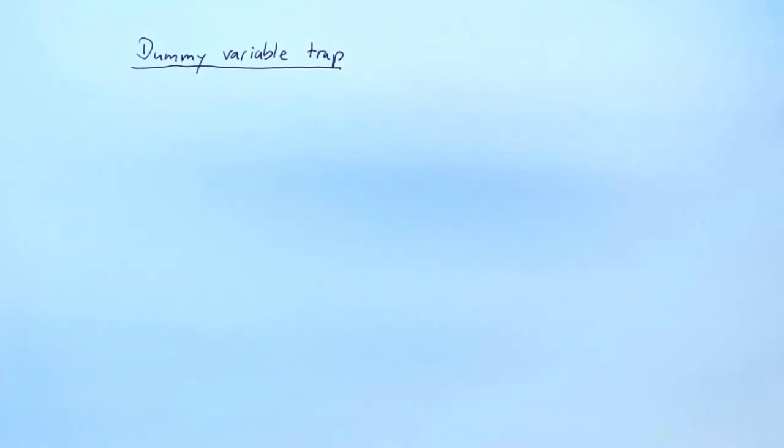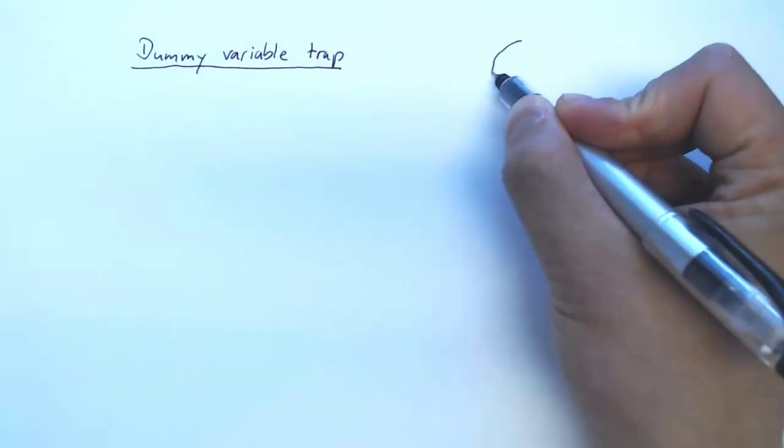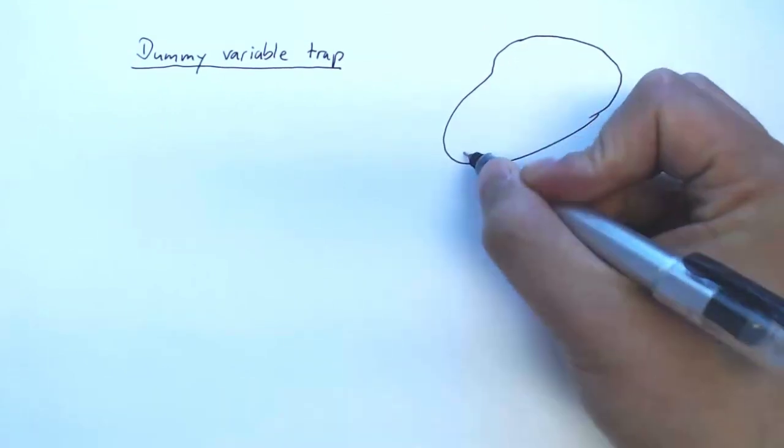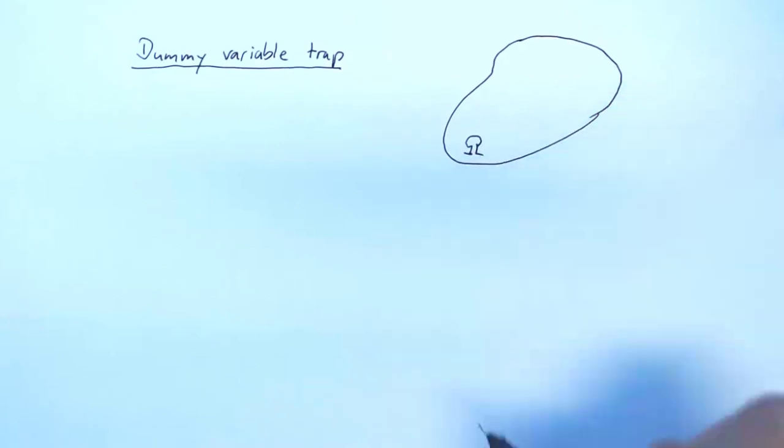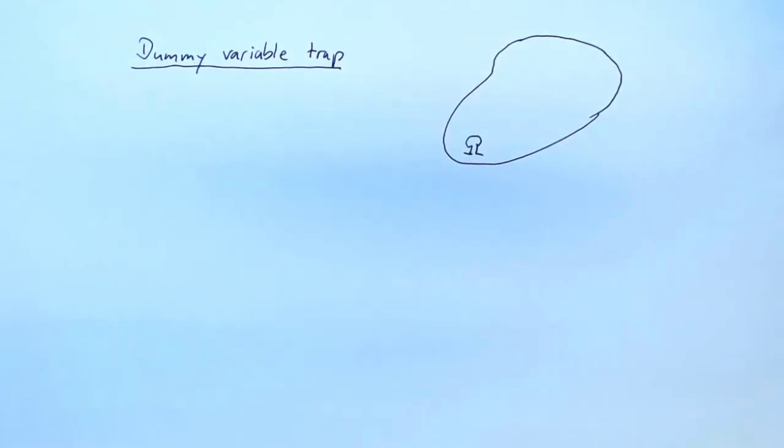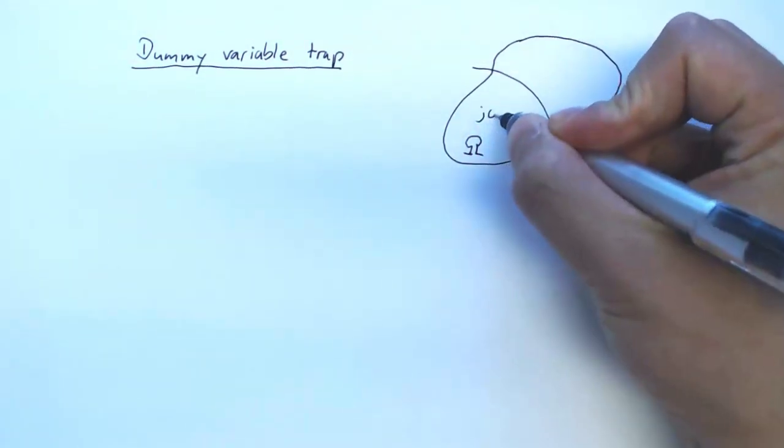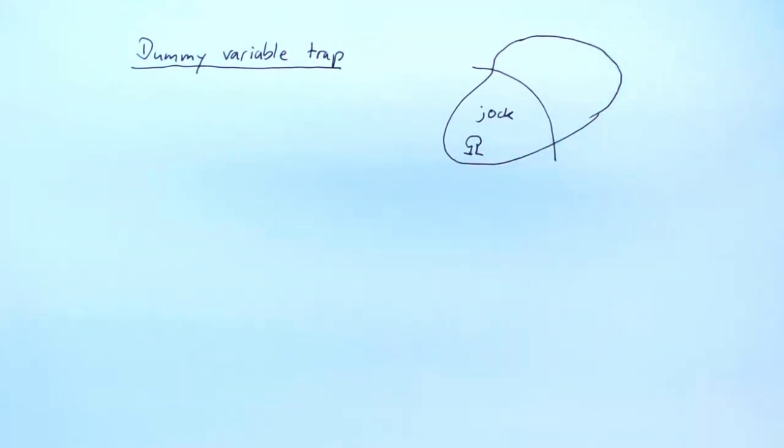For this example, we look at our population of all econometric students, and we let ourselves be inspired by 80s American high school movies. So we know that everyone is either a jock or they are a nerd.